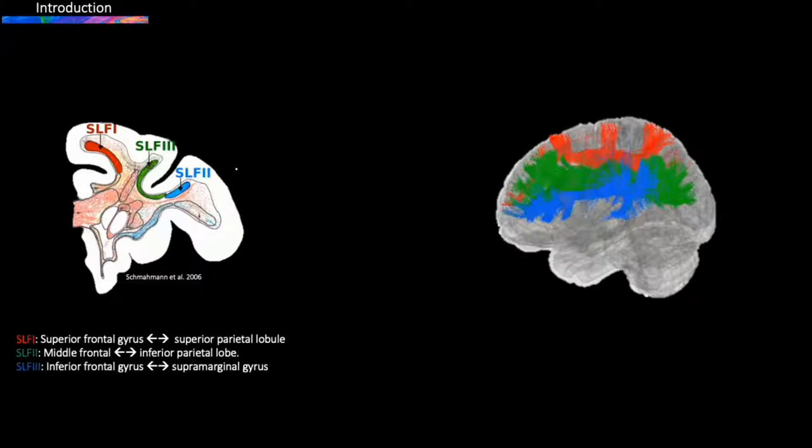The human morphology of the most dorsal component remains highly controversial, and its tractography-based reconstruction challenging. Particularly, while the literature agrees on its posterior termination in the superior parietal lobule, it remains unclear whether the SLF1 terminates in the supplementary motor area or extends more anteriorly to connect regions in the superior frontal gyrus.